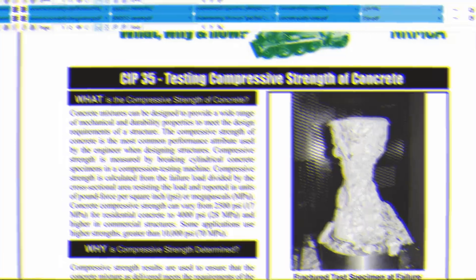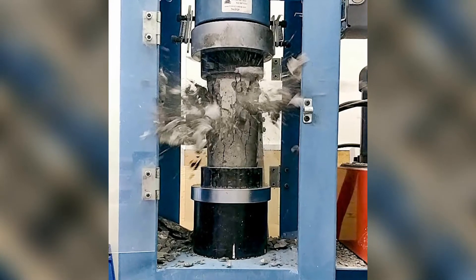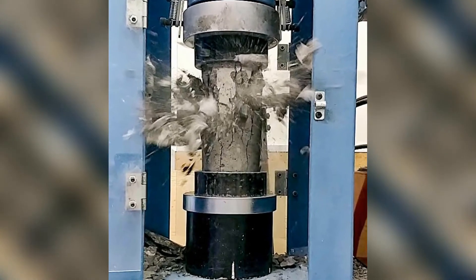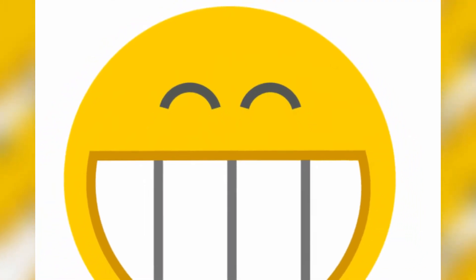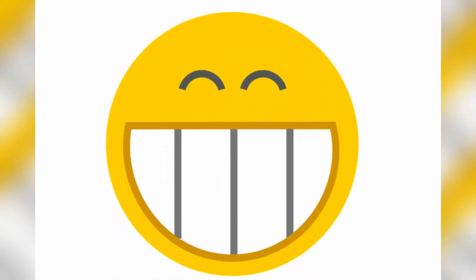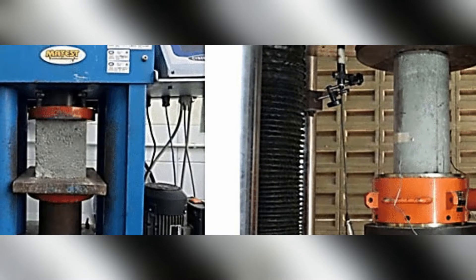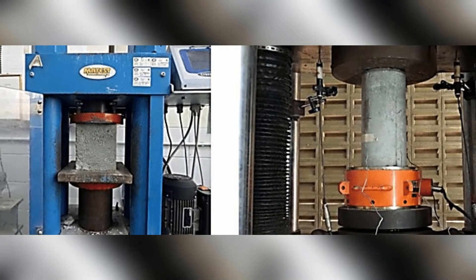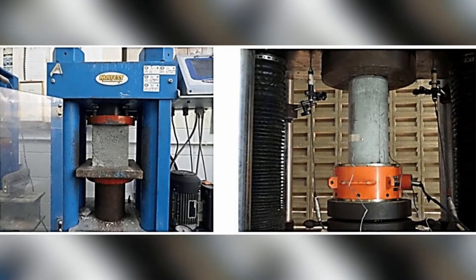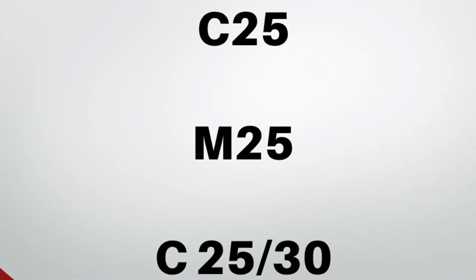Method two is done using a cylindrical mold that produces a concrete cylinder of diameter 15 centimeters and a height of 30 centimeters, and they proceed to crush this sample. The key point is that one test uses a cube and the other uses a cylinder, and because of this the strength required after 28 days will be different — which is exactly why we have C25 and M25, and also C25/30.